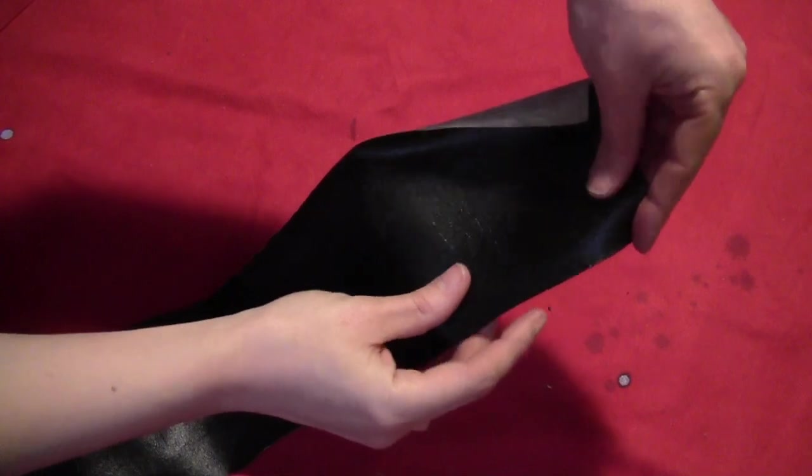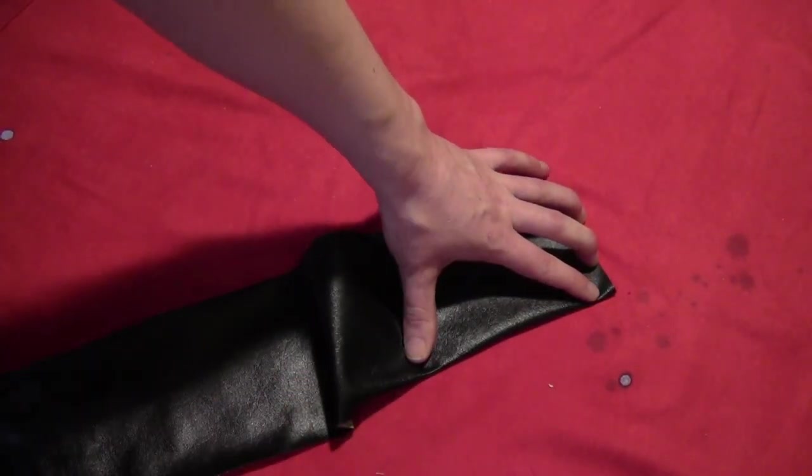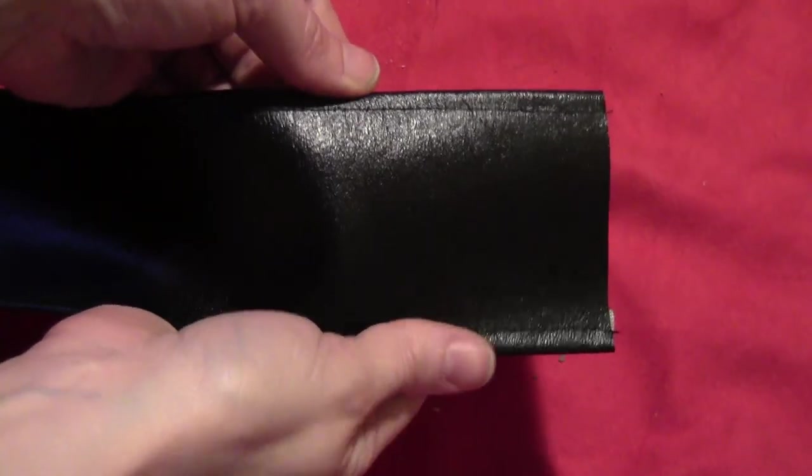To make the belt, take some old black vinyl, fold the edges under, and sew them in place all the way down.